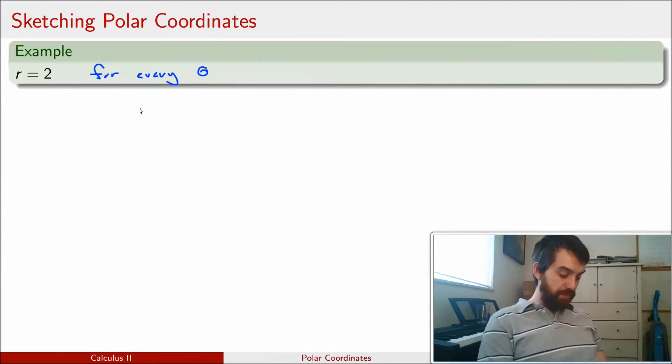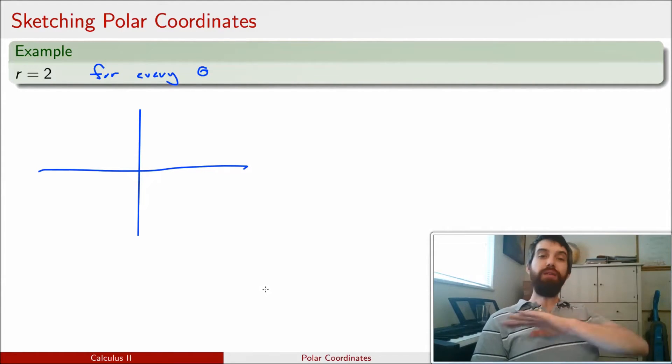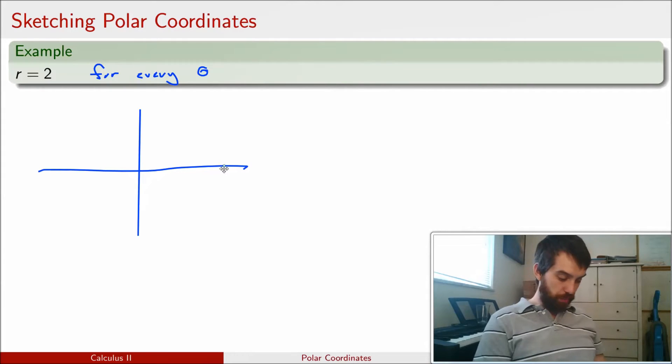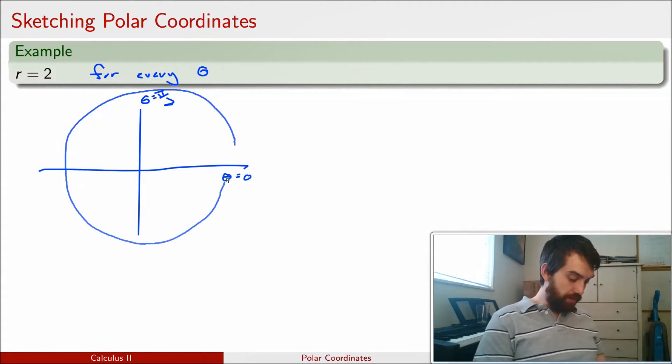In other words, if I'm trying to graph what this curve looks like, it doesn't matter what the theta is. It doesn't matter where I am on my theta, whether I'm completely horizontal where theta is equal to 0, or if I'm up on what is in Cartesian the y-axis, where theta is equal to pi over 2. It doesn't matter where I am. The radius is always 2. So what this is, is the equation of a circle that has radius r equal to 2.